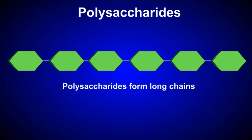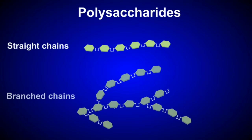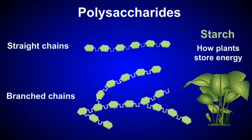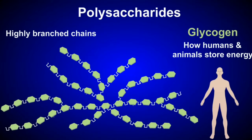Polysaccharides are formed when glucose monomers link together to form long chains. These long chains of glucose units are ideal for storing energy. The chains can be straight or branched. Plants store energy in the form of amylose, which has straight chains, or amylopectin, which is branched. Animals differ from plants in that they store energy in the form of glycogen, which is a highly branched polysaccharide that can be broken down quickly to supply energy to tissues.